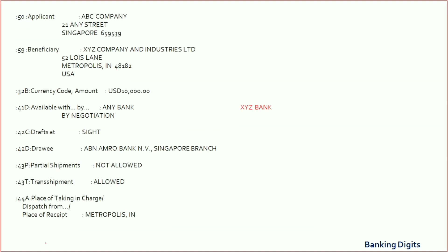Field 50 refers to the name and address of the applicant, and Field 59 refers to the name and address of the beneficiary. Field 32B refers to the amount and currency of the LC — here it is mentioned as USD 10,000. Documents under this LC must be presented in USD currency only, and the issuing bank will honor up to USD 10,000 provided the documents are compliant.